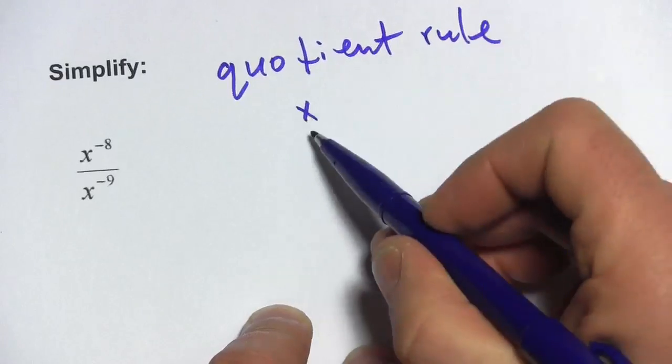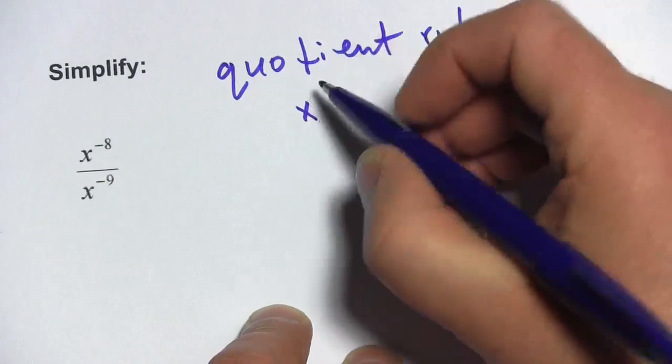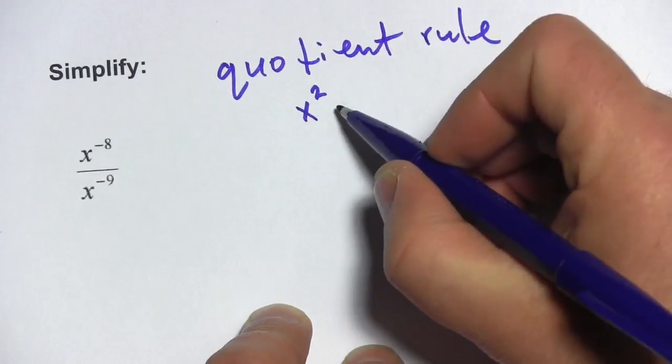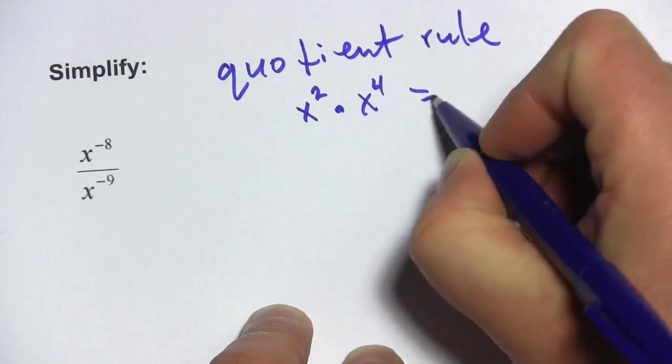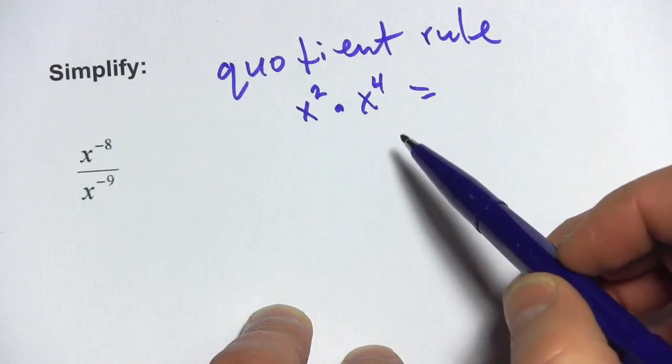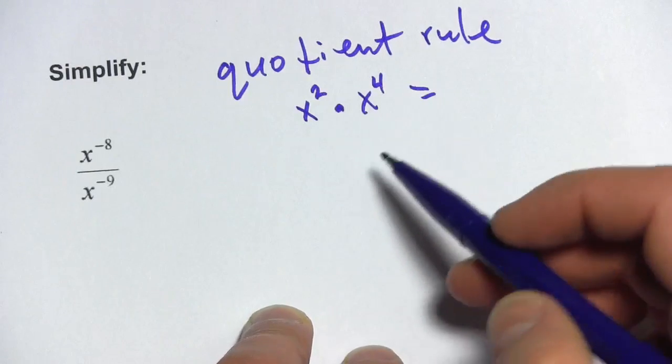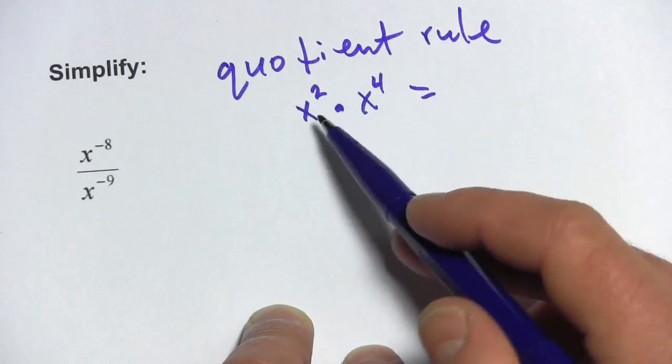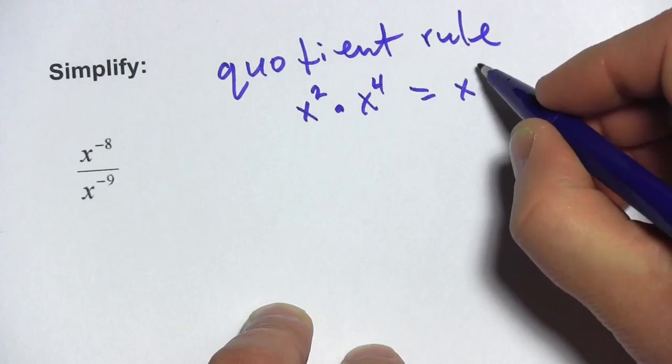Remember when you have two things with the same base and different exponents that you're multiplying together. So if we wanted to multiply x squared times x to the fourth, you add the exponents. So when you multiply, you add the exponents and this would just be x to the sixth.